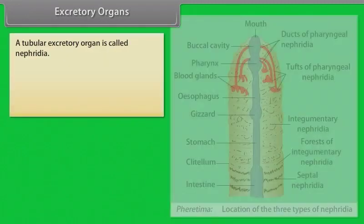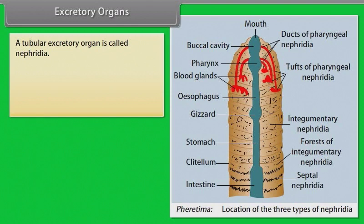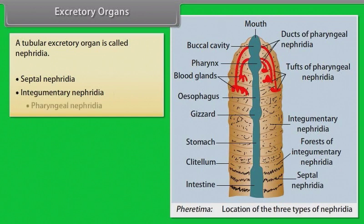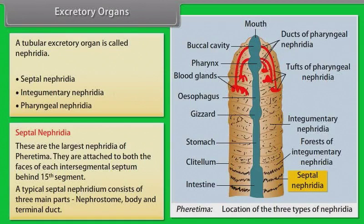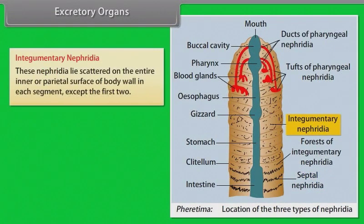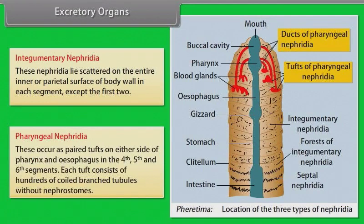The tubular excretory organ is called nephridium, and it is of three types: septal, integumentary, and pharyngeal. Septal nephridia are the largest nephridia of Ferritima, attached to both faces of each intersegmental septum behind the fifteenth segment; they consist of nephrostome, body, and terminal duct. Integumentary nephridia lie scattered on the inner parietal surface of the body wall in each segment except the first two. Pharyngeal nephridia occur as paired tufts on either side of the pharynx and oesophagus in the fourth, fifth, and sixth segments, each tuft consisting of hundreds of coiled branched tubules without nephrostomes.